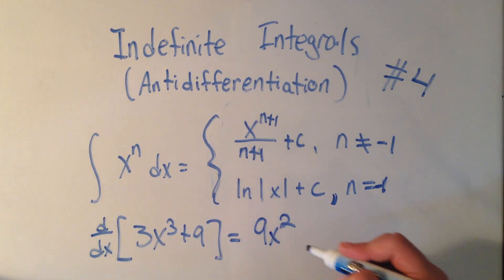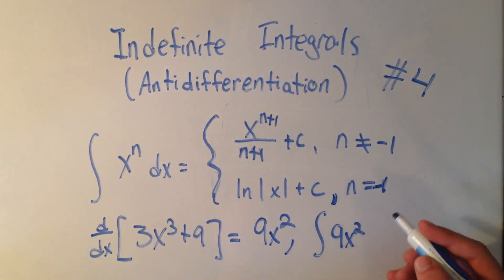Let me now, I'll write a comma there to separate things. Let me integrate 9x squared. So I'll write my integral sign. I'll write what I want to integrate. That's called the integrand. And then d, whatever variable I'm using, in this case, x.